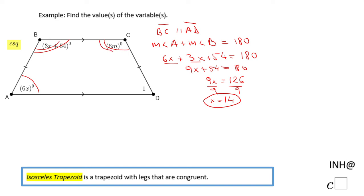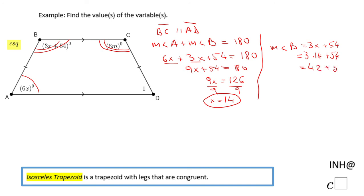Now how do we find M? Angle B and angle C are congruent base angles. So I'll plug x = 14 into angle B: the measure of angle B is 3x plus 54, which gives 3 times 14 plus 54, that's 42 plus 54, which equals 96 degrees. So the measure of angle B is 96 degrees, and therefore the measure of angle C is also 96 degrees, since these two are congruent base angles.